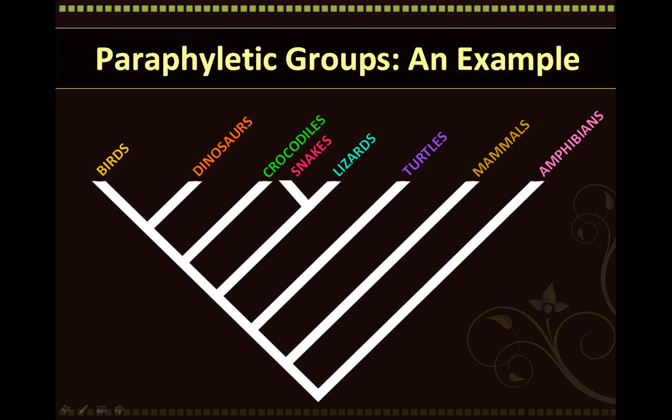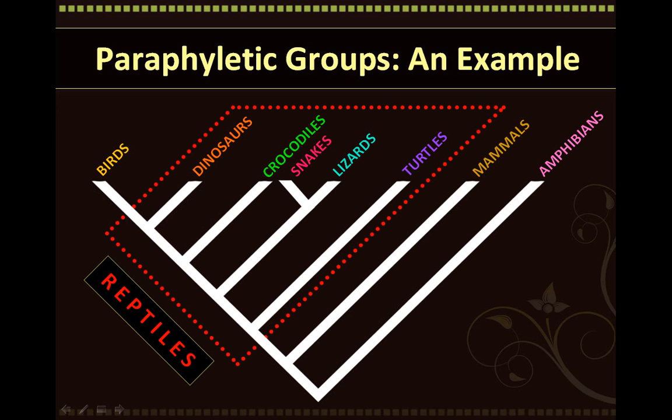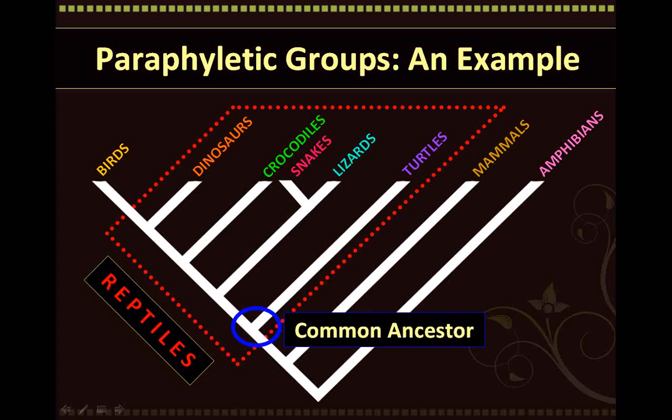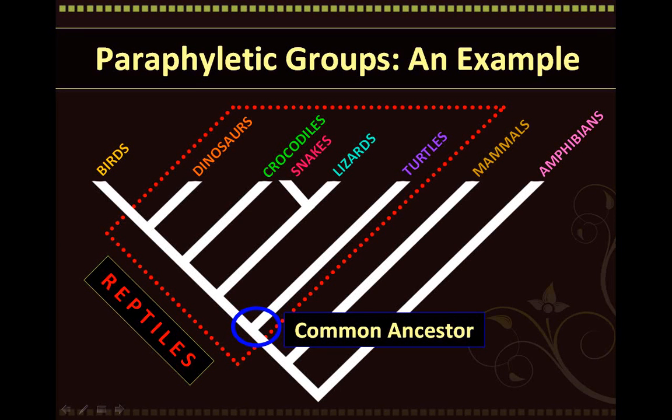The taxonomic group reptiles contains dinosaurs, crocodiles, snakes, lizards, and turtles, and it actually does not include the birds. So this would constitute reptiles to be a paraphyletic group. This is because the common ancestor that unites all the reptiles is also an ancestor of the birds.